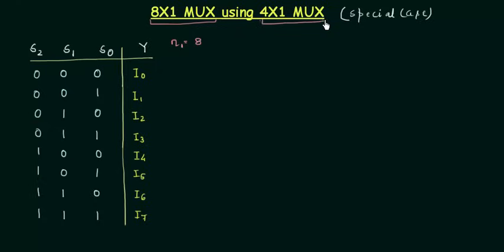Now the available MUX is 4x1, so n2, the number of input data lines in the available MUX is equal to 4. The next step is to divide this 8 by this 4, so 8 divided by 4 gives you 2.